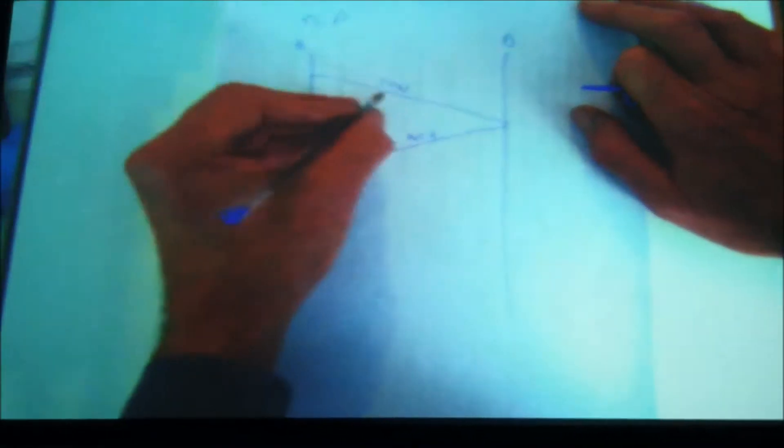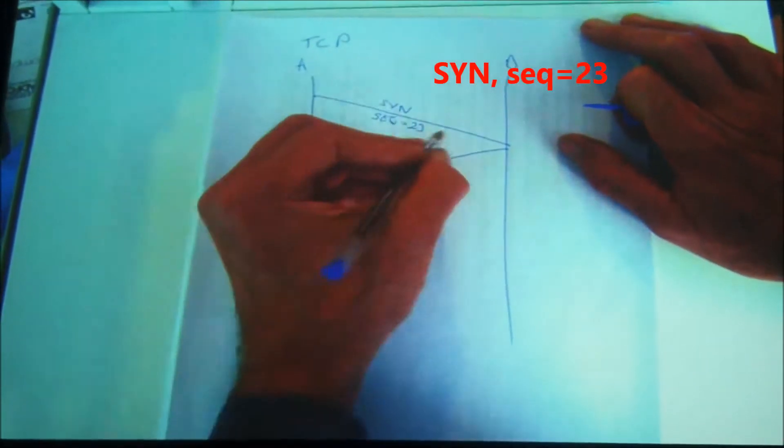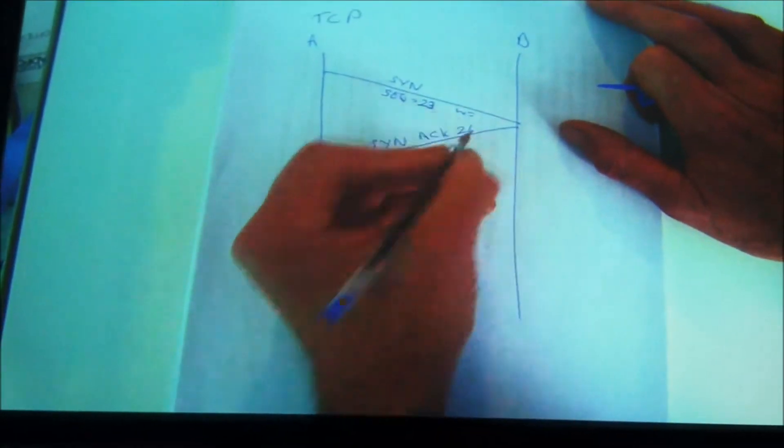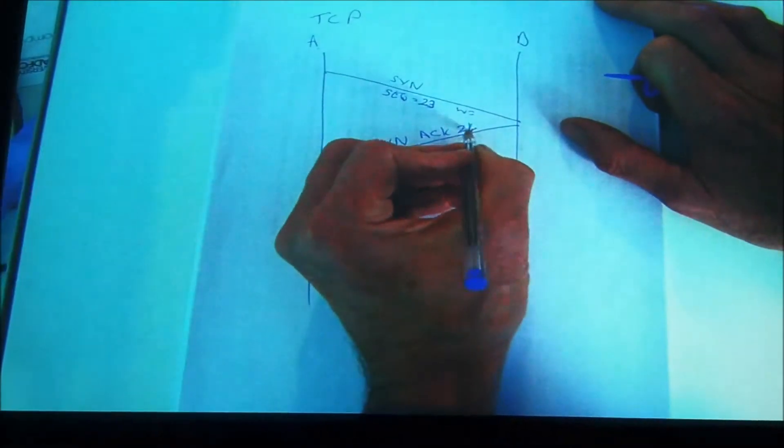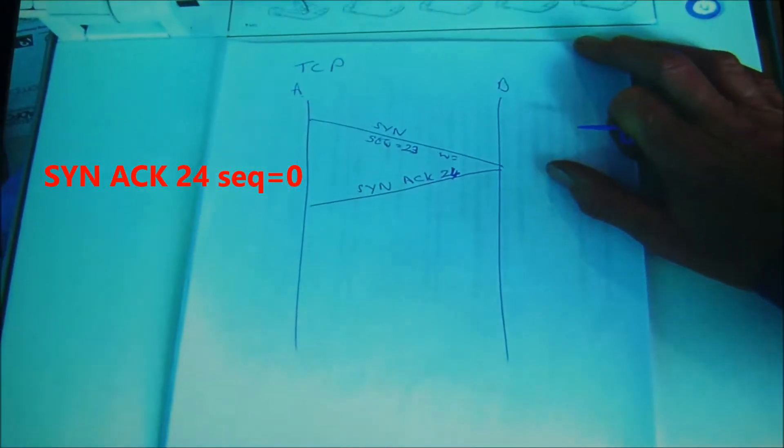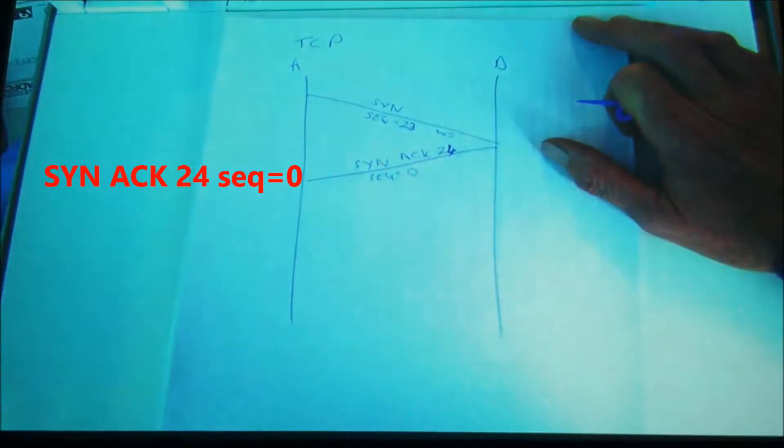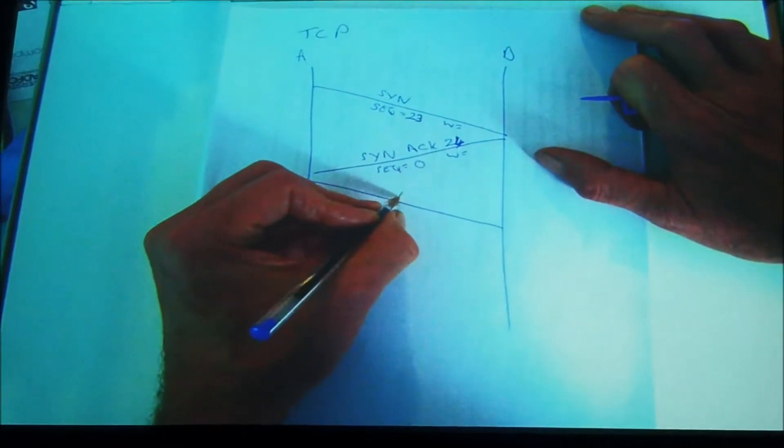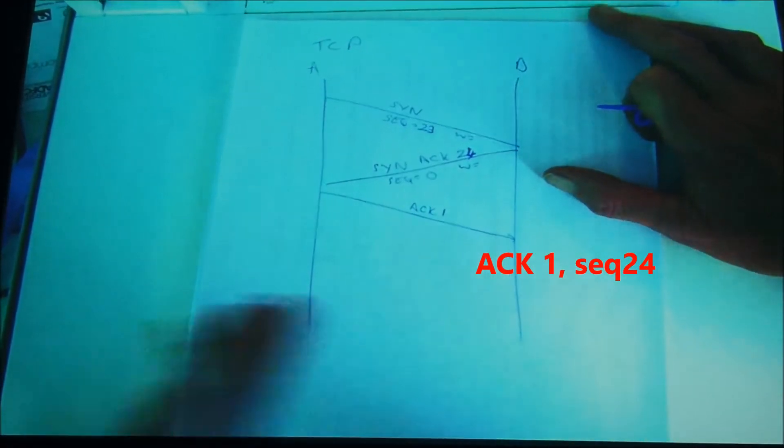If we want to look at more detail, it might have a sequence number equals, let's say, 23. It may say a window size. This will respond with an ACK at 24. Why ACK 24? It's expecting 24 back when it goes back again. It might add its own sequence number, which might start at zero, and it might also have a window size for itself. Then there will be an ACK 1 coming back to say that it's got a sequence number in its ACK managing. Then the rest of the communications can take place.